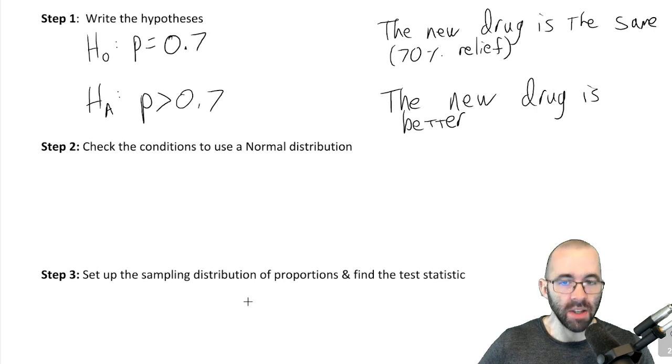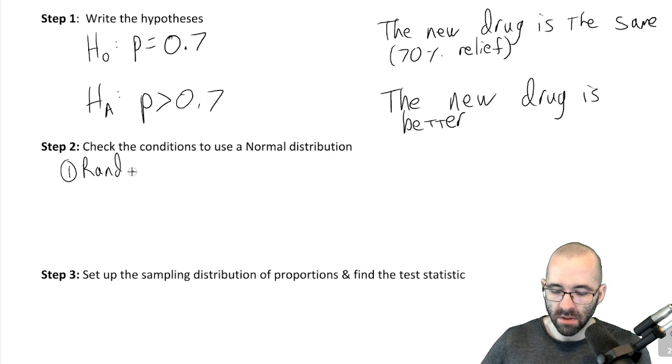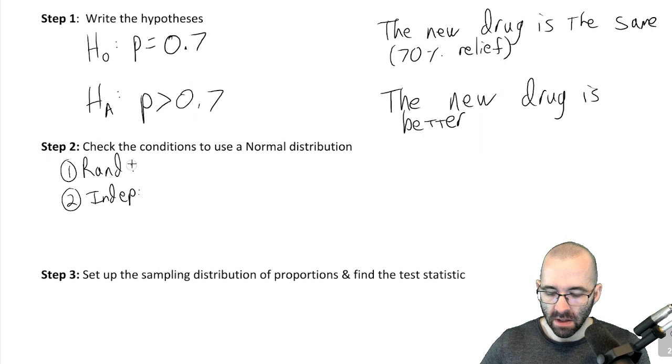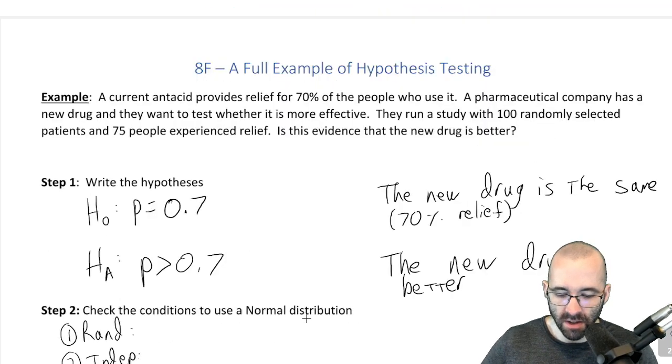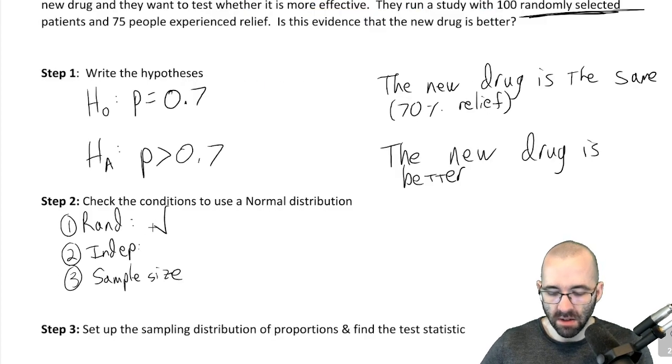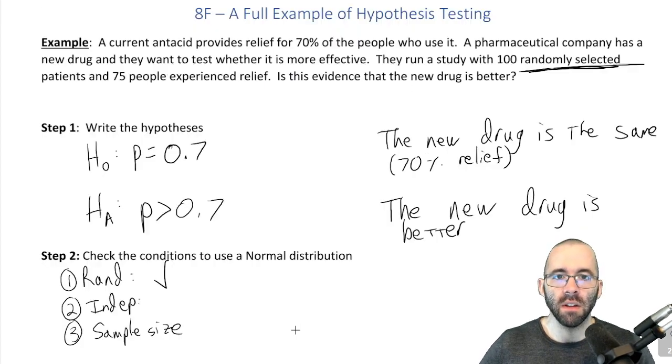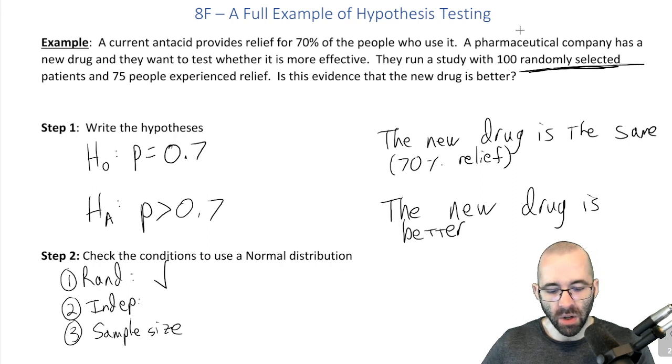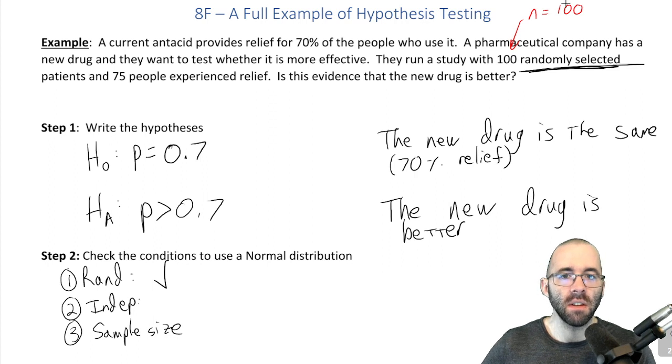So we want to check to see can we use a sampling distribution. We need randomization, we need independence which is the 10% condition usually, and we need sample size: 10 successes and 10 failures is what we should expect. So this time it finally told us that they're randomly selected. Good. We're looking at 100 people, this is our sample size. We can assume that this is less than 10% of the population.